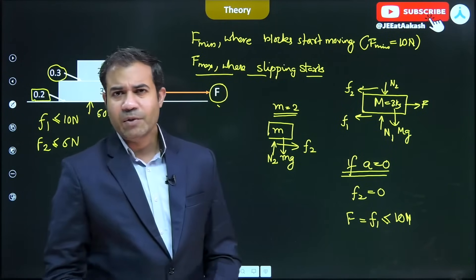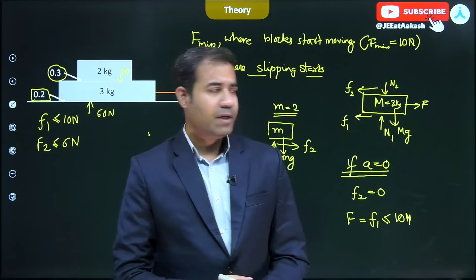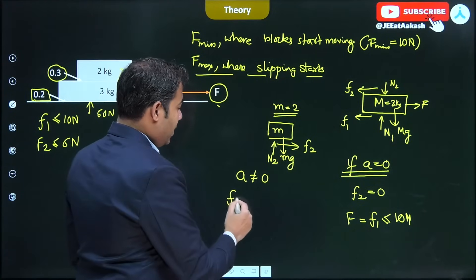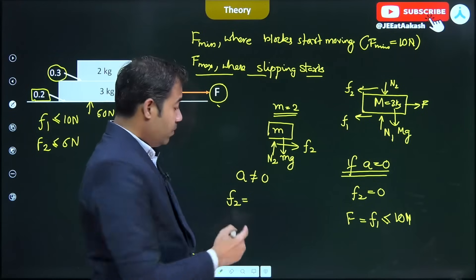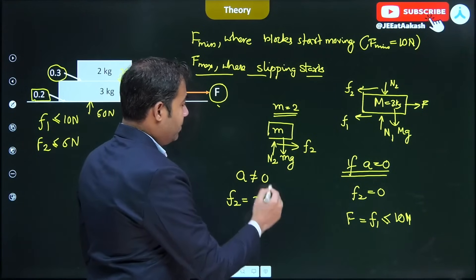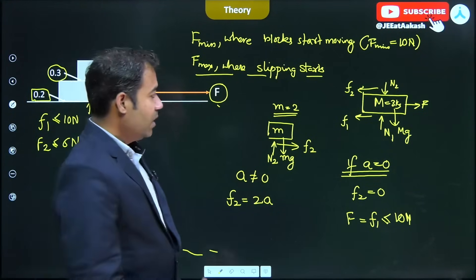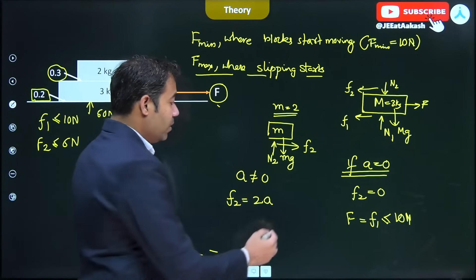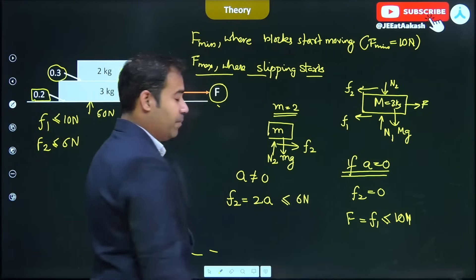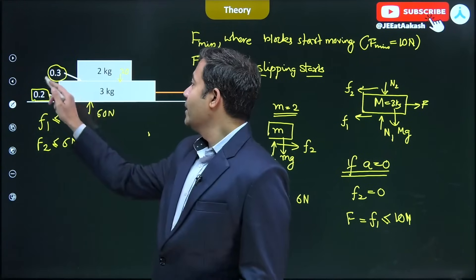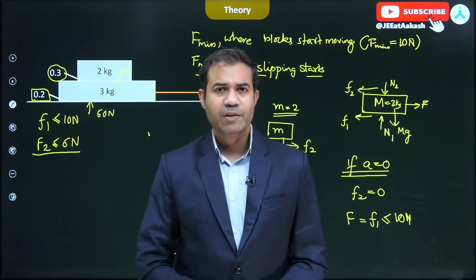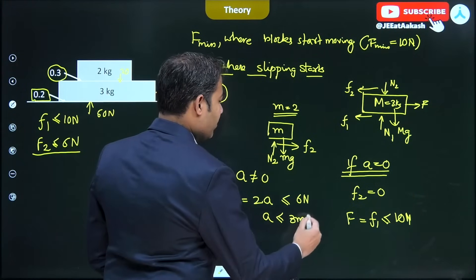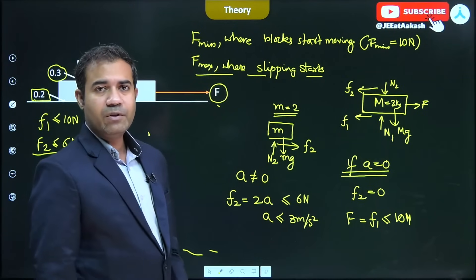Now let's say the system starts to accelerate — A is not equal to zero. Then F2 must equal 2A (mass times acceleration for the 2 kg block). This is valid for the no-slipping condition. We know F2 is less than or equal to 6 Newtons, so the acceleration must be less than or equal to 3 meters per second squared.